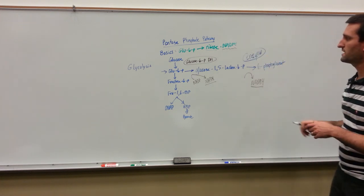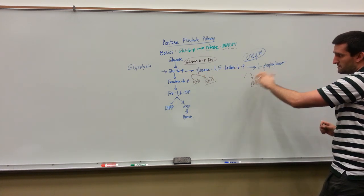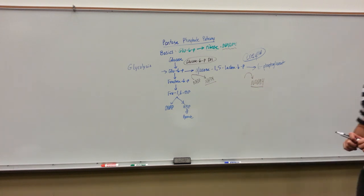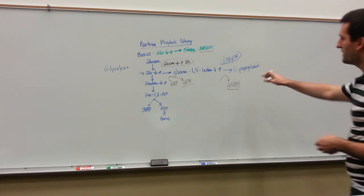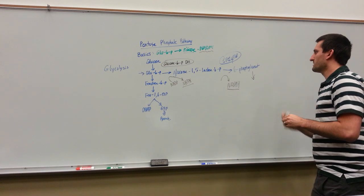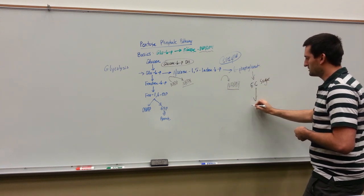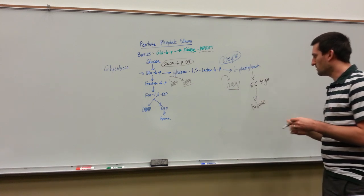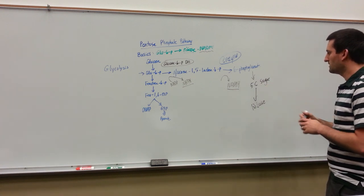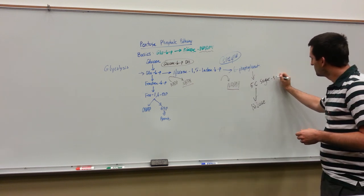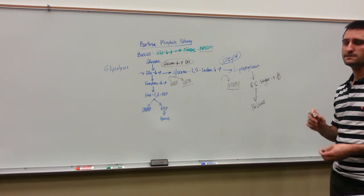Looking back at the basics, there's our NADPH component. We're taking this glucose-6-phosphate through a few reactions and creating an NADPH molecule. This 6-phosphogluconate eventually gets converted into a 5-carbon sugar — specifically a ribulose-5-phosphate — which can eventually be turned into a ribose sugar. That ribose will be used for DNA synthesis and a host of other cellular activities.